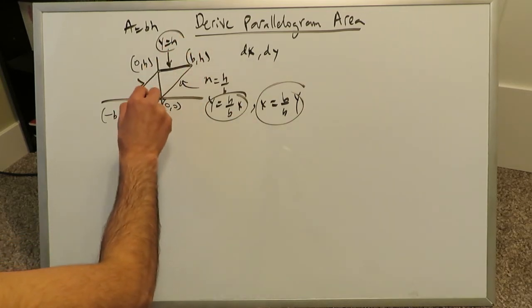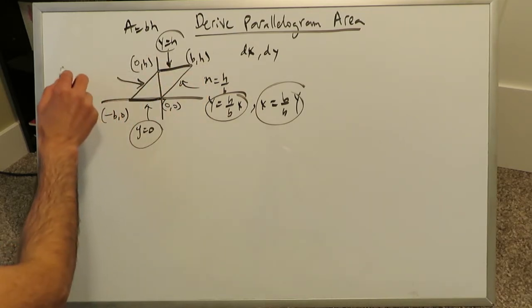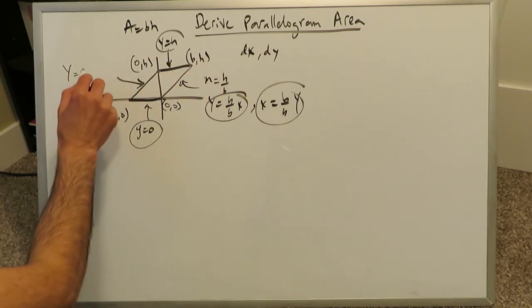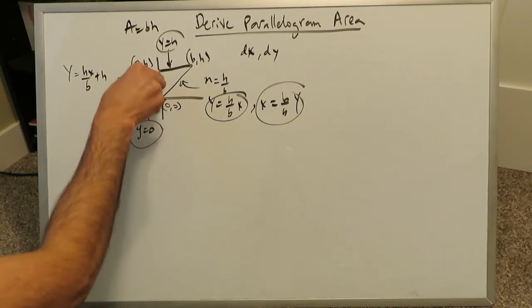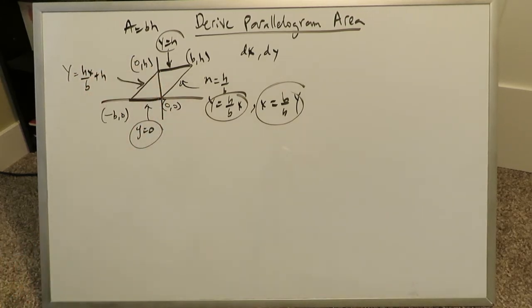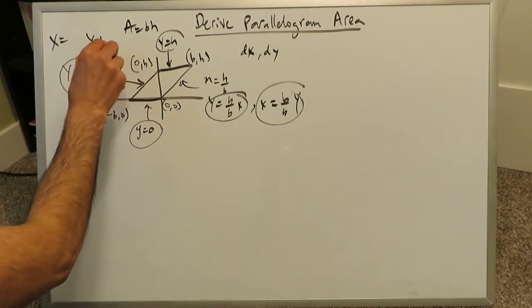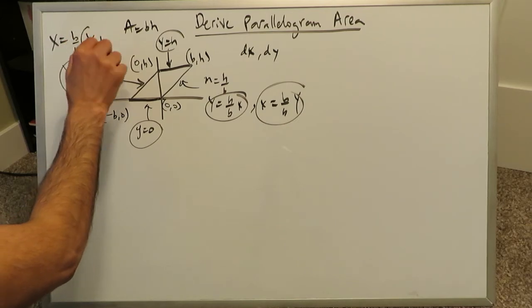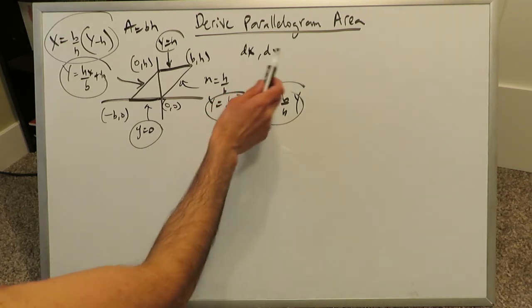These are equations that will come in handy. We must determine the equation of this line. If this right here is parallel to that, they must have the same slope. The equation of this line will be y is equal to hx over b plus h, because you have a y intercept right here. In terms of x, the same equation will become what? It will become x is equal to y minus h times b over h. You're just solving for x. And here's your other equation.